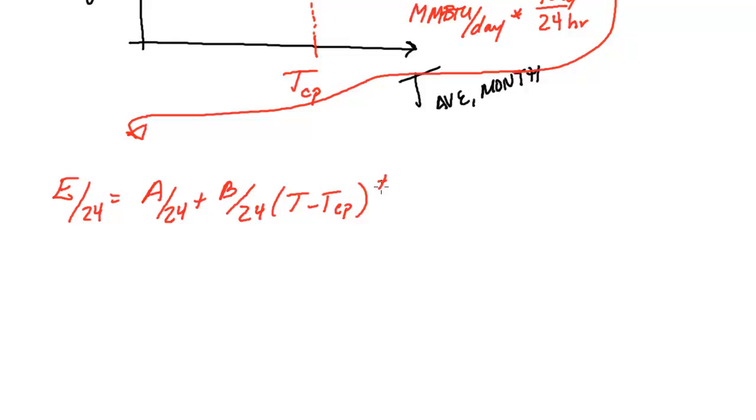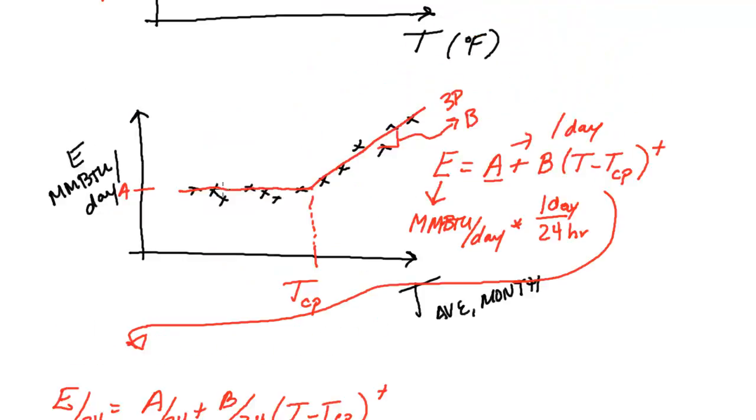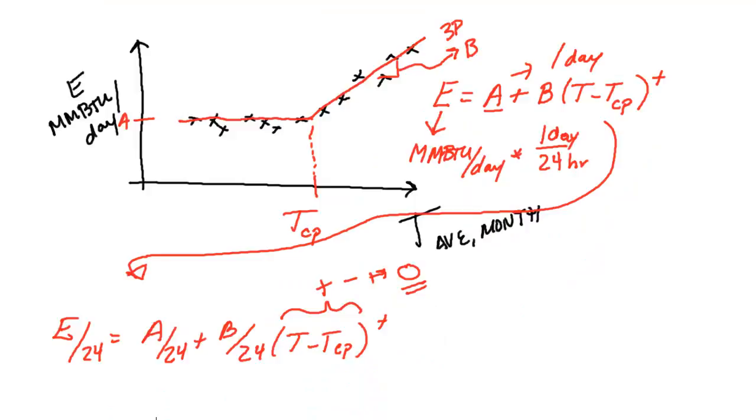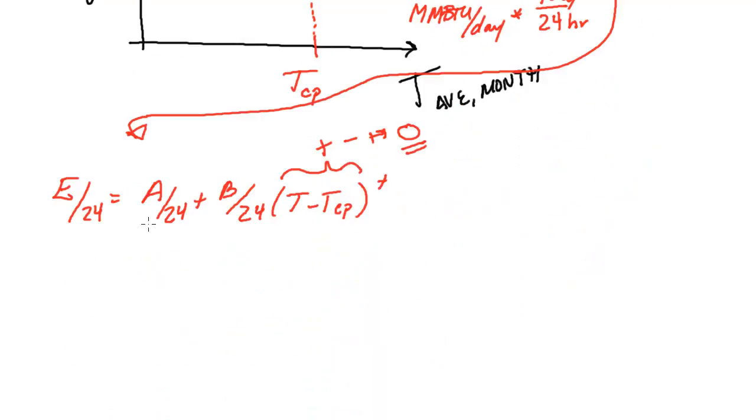And again, this positive nomenclature here means that basically, if this value inside the parentheses is positive, then you get this value. If it's negative, that's going to give you 0. So this value is never negative here. That's why below this temperature change point, this whole term goes to 0, and all you're left with is this A divided by 24 term, right here.